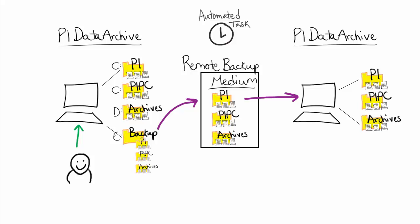However, if the automated task runs and copies the entire PI Data Archive directory and all of your archive files every time it runs, it is performing a lot more work than it needs to. For this reason, the automated PI Data Archive backups are known as incremental. This means they will only include files that have been modified since the last automated backup was performed. These files will be updated in the local backup directory as well as forwarded to your remote backup location.